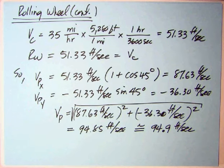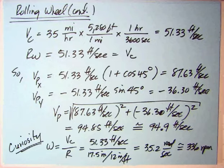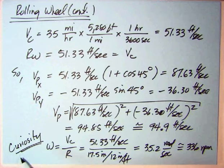Well, I'm curious, I hope you are too, about what is omega? So as I say, to save YouTube time, curiosity says omega is V C over R, 51.33 over 17.5, gives 35.2 radians per second, about 336 RPM.